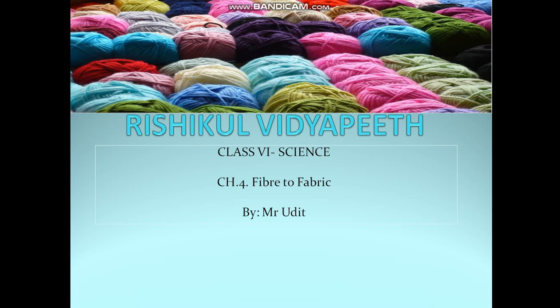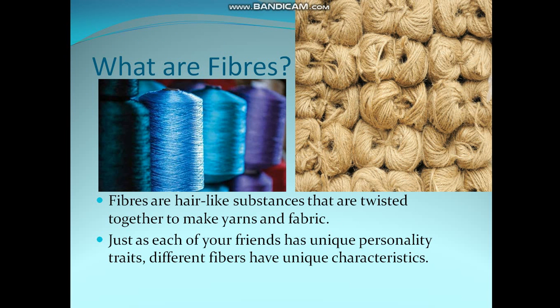In that period, they did not know how to make clothes from different naturally occurring fibers, which we use nowadays. So, what is a fiber? A fiber is a hair-like strand found abundantly in nature — the underlying substance that is twisted together to make yarns and fabric.